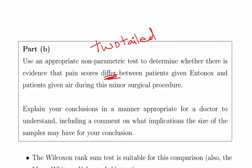There's actually how you correctly state the mathematical statement regarding the null and alternative hypothesis. This is in relation to a locational shift. But essentially, are they the same? Is there any effect at a practical level? Is there any difference? Is what we're looking at. Or is one better at alleviating pain than the other? Explain your conclusions in a manner appropriate for a doctor to understand, including a comment of the implication of the sample size.